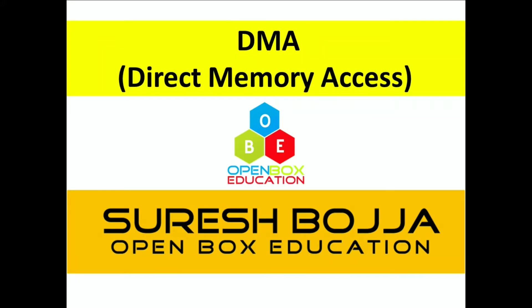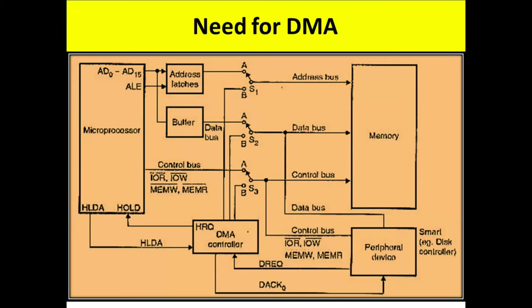Hello, today I am going to explain the Direct Memory Access concept. The data transfer between peripherals and memory is a frequent activity in any computer system. There are three methods by which data transfer can be done: the polling method, the interrupt method, and the direct memory access method.